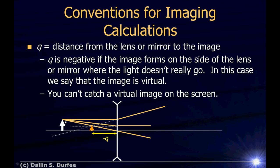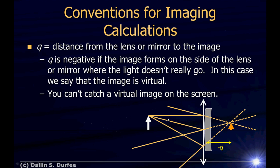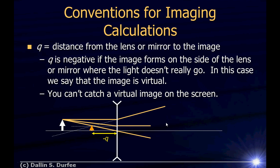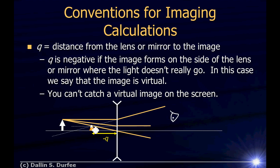For negative Q, imagine a diverging lens that spreads light out. My rays come out like this, and if I put my eye here, it looks like the rays are coming from a point on the other side of the lens. The image is on the same side as the object — the wrong side for the light to go. So this distance is negative Q. A negative Q means the image forms on the side of the lens or mirror where the light doesn't really go, and we call that a virtual image.